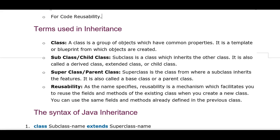Just like we can access our parents' car and drive it - we can access the properties they have. That is what we call a derived class or child class. Next is superclass or parent class. The superclass is the class from where the subclass inherits its features. It is also called a base class or parent class - the class from which we are taking properties to create a subclass. The class we are taking from, we call it superclass or parent class.